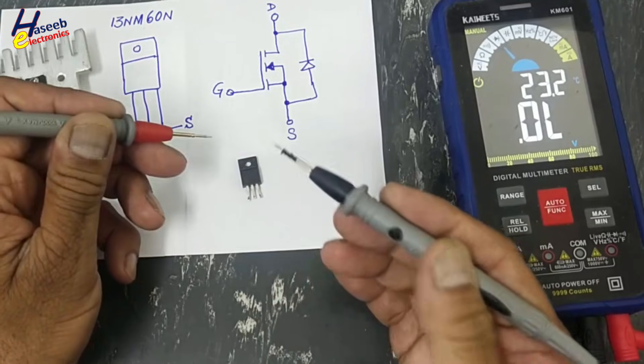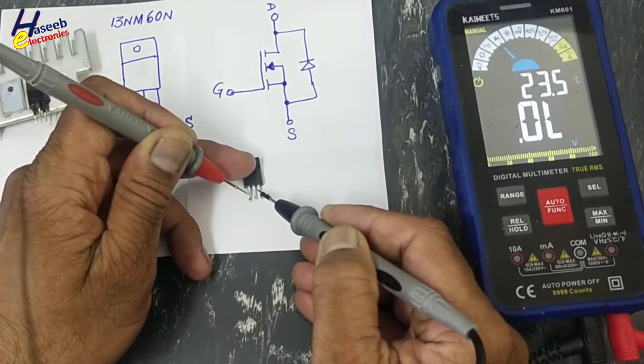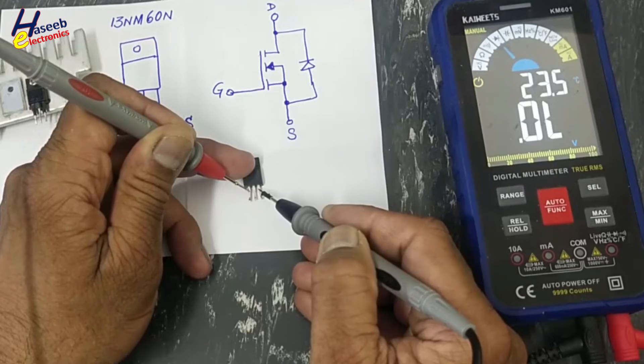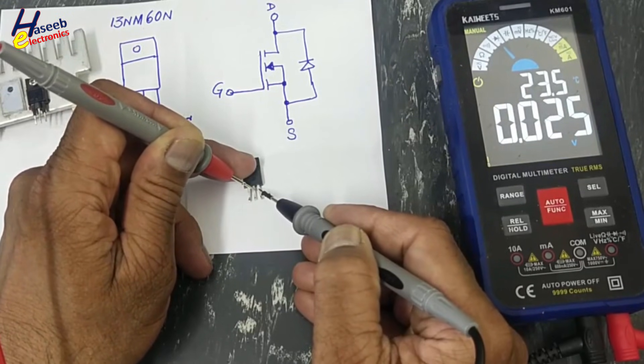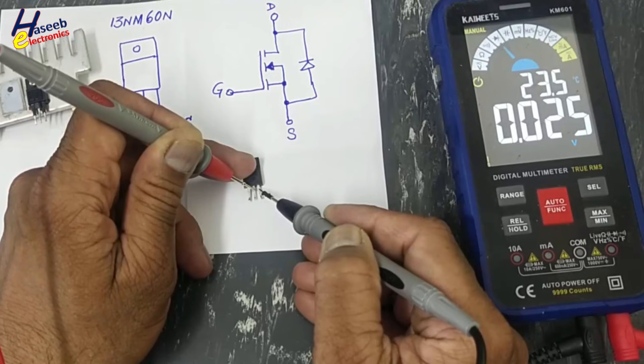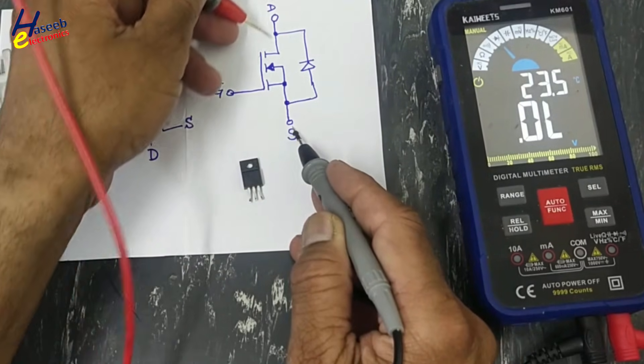Now black lead at source, red lead at gate. We will charge this gate. Now we will touch here. Before this it was open circuit, but now the channel is turned on.